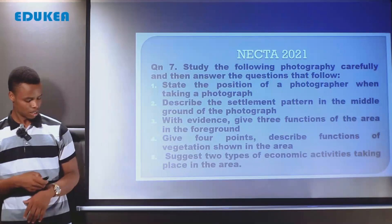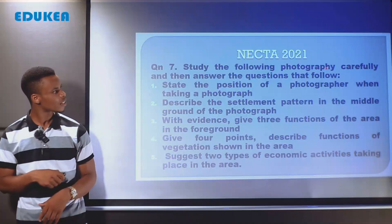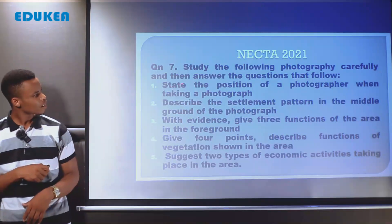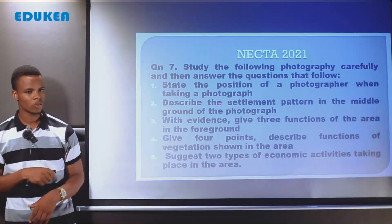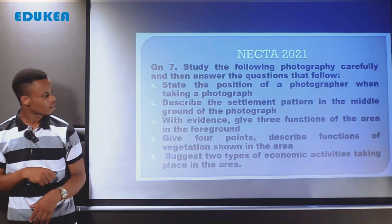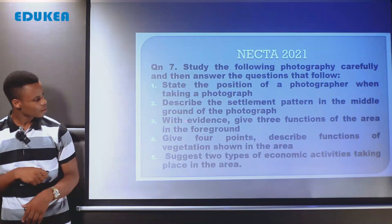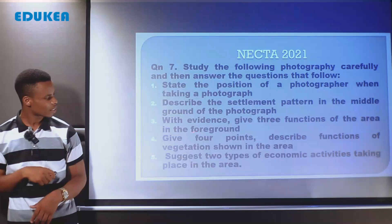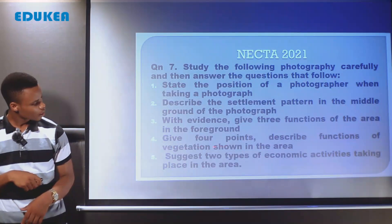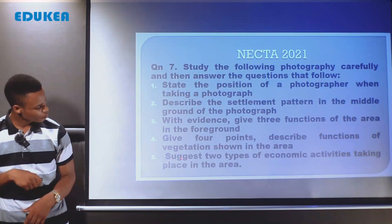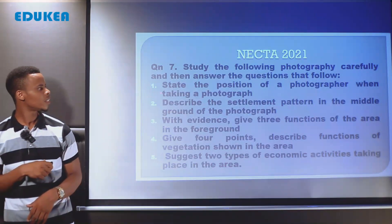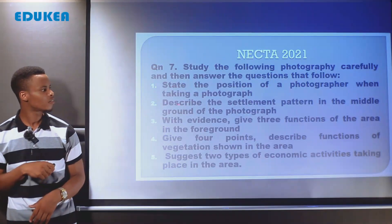The questions are as follows: Question one asks to state the position of the photographer when taking the photograph. Question two asks to describe the settlement pattern in the middle ground of the photograph. Question three asks to give the land use fraction of the area in the foreground with evidence. Question four asks to give four points describing the function of vegetation shown in the area. Question five asks to suggest two types of economic activities taking place in the area.